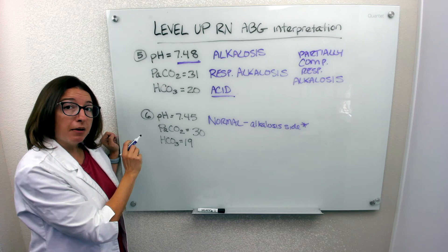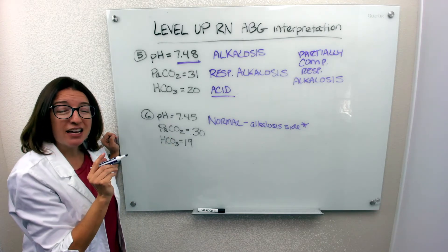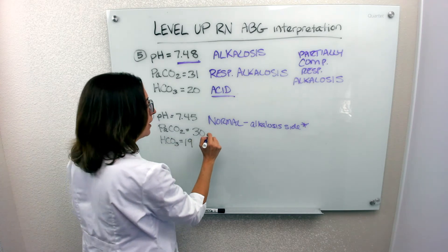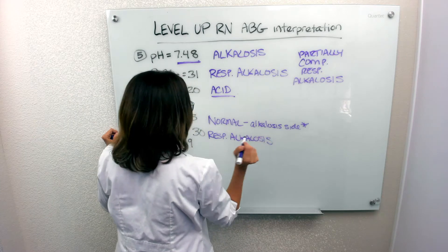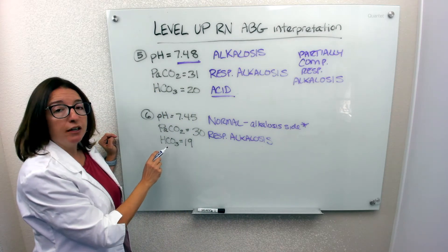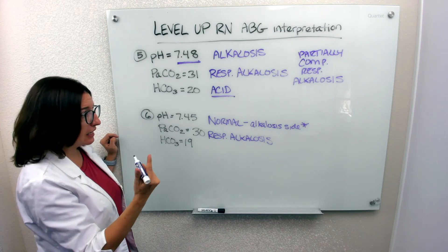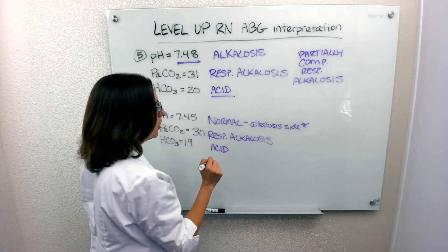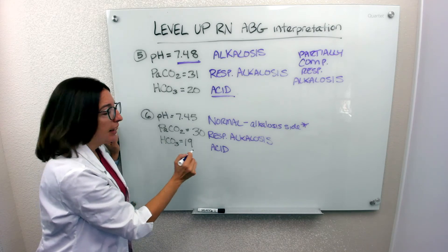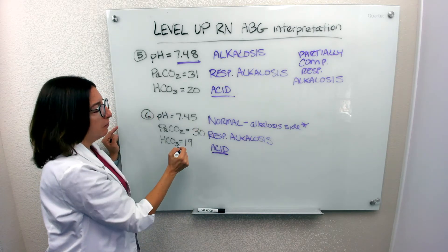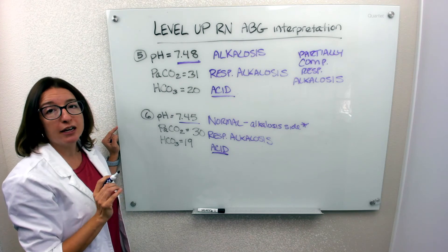Let's see what's going on with the respiratory system and the metabolic system. PaCO2 should be between 35 and 45. At 30, it's out of range on the basic side, so we do have respiratory alkalosis going on. HCO3 should be between 22 and 26 — it's 19, which is on the low, acidic side. So we have respiratory alkalosis that the metabolic system has compensated for, bringing the pH up to a normal level: fully compensated respiratory alkalosis.